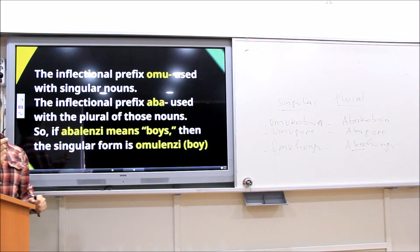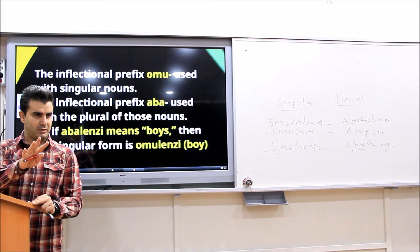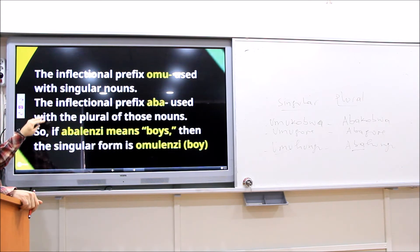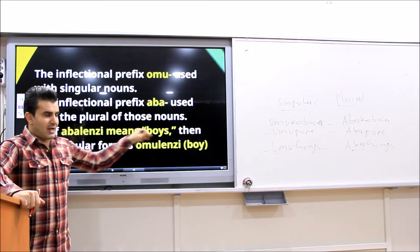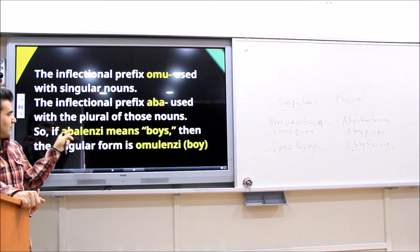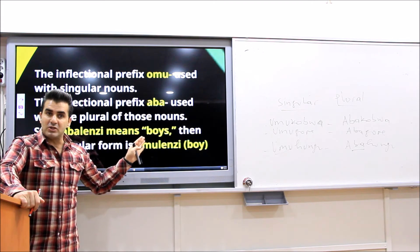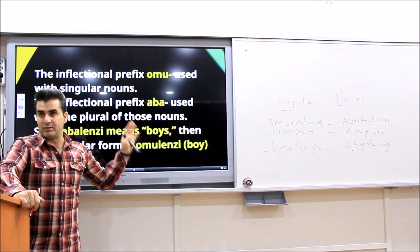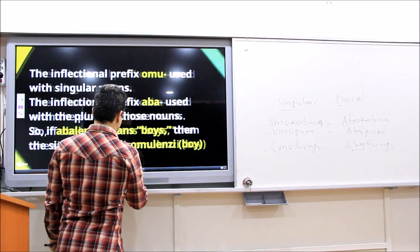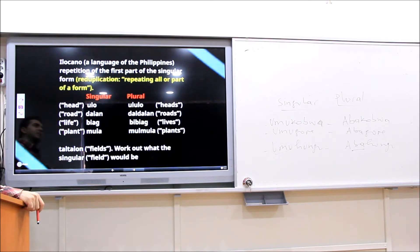So 'aba' is the inflectional morpheme that makes the noun plural. For example, 'abalenzi' means boys, and 'aba' is the inflectional morpheme that makes the noun plural. Then the singular form would be 'omulenzi,' because 'omu' indicates that the noun is singular. The Philippine language uses repetition of the first part of the singular form.